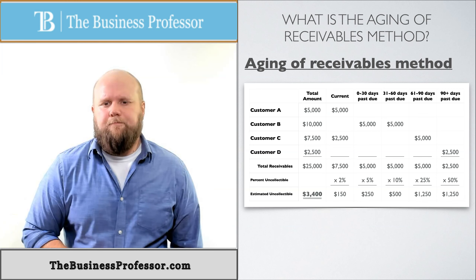The last method we're going to talk about is the aging of receivables method. This one is a little bit more detailed. It gives us a little bit more accuracy because it breaks things down more. So let's get into the verbiage of it, and then I'll show you an example of it.